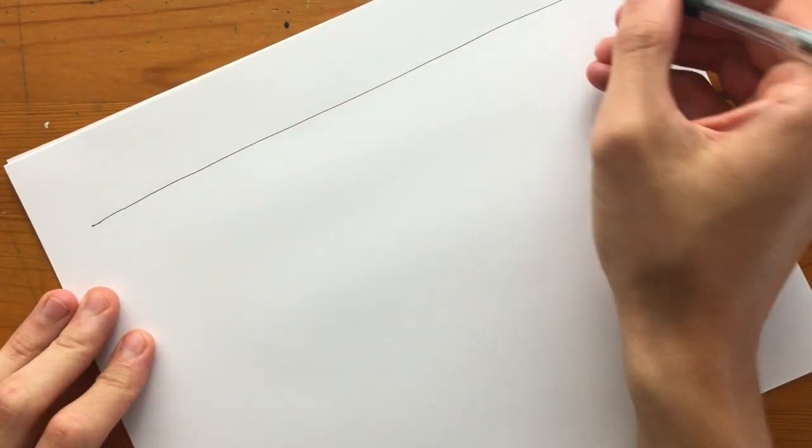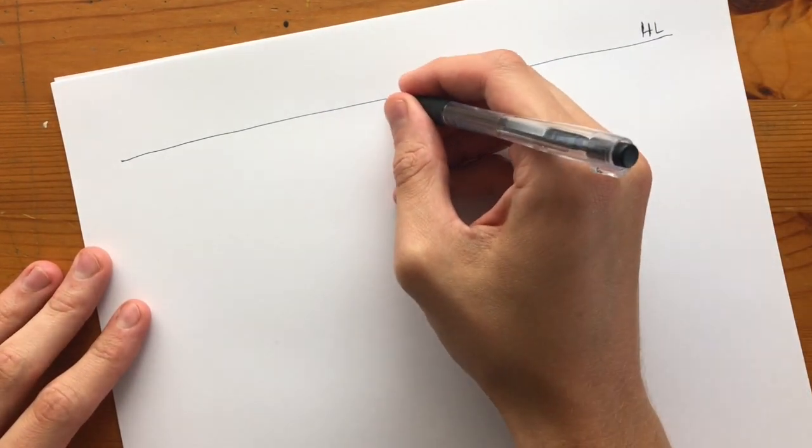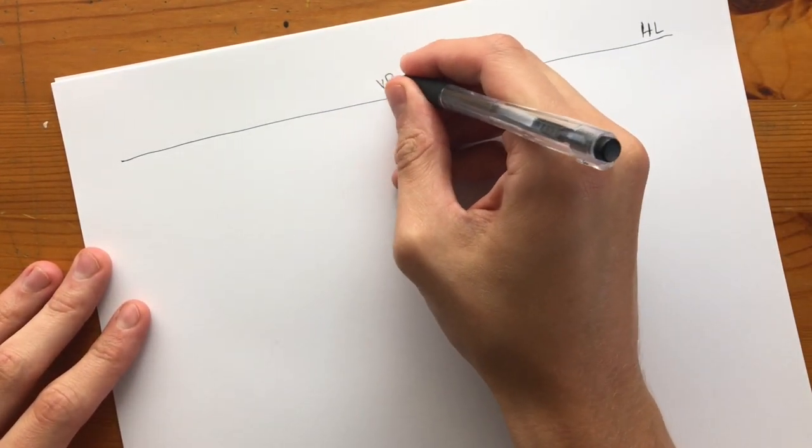Start by drawing a horizon line across the top of your page. Then add a vanishing point onto it.